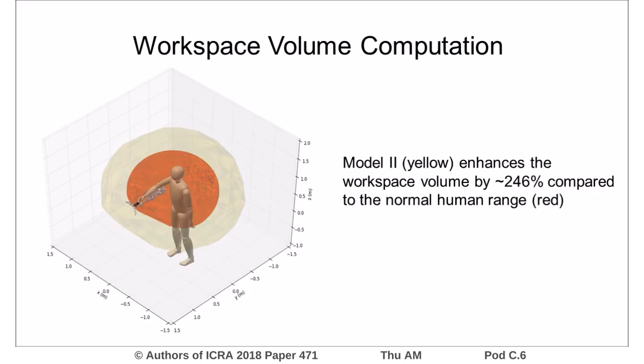We found that Model 2, shown in yellow, enhances the reachable workspace volume by about 246% compared to the normal human range shown in red.